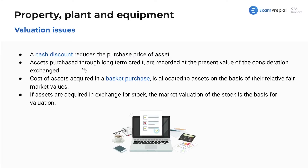The cost of assets acquired in a basket purchase — so maybe you purchased a machine, a piece of land, and a building all at once in a big basket purchase. What do we do here? We allocate the assets on the basis of their relative fair market values. We will see this in the fair value measurement chapter, so if you want to see more about how you treat a basket purchase, go take a look there.